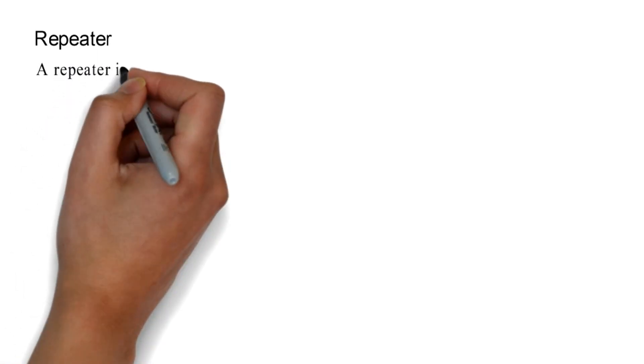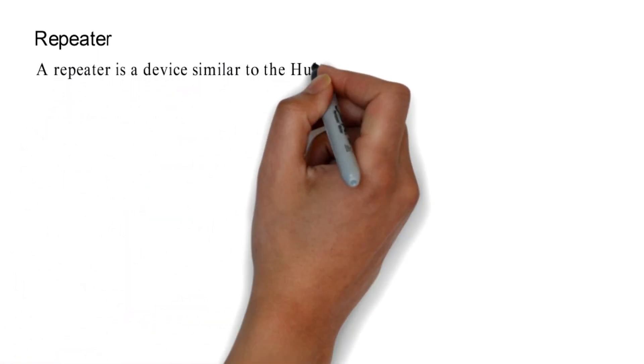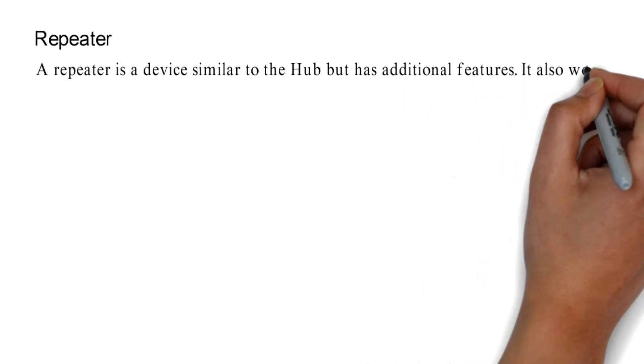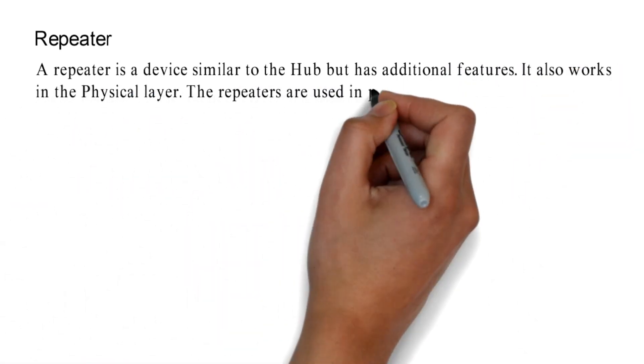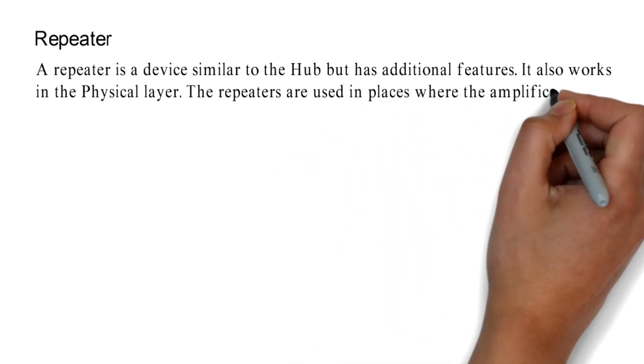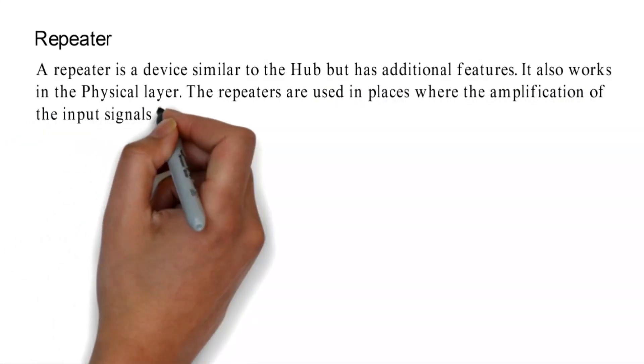Repeater. A repeater is a device similar to the hub but has additional features. It also works in the physical layer. The repeaters are used in places where the amplification of the input signals is necessary.